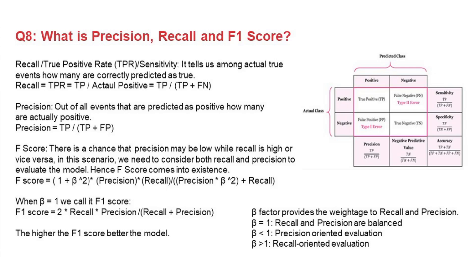Once we find recall and precision, these two values may differ significantly — recall may be high and precision may be low, or vice versa. We need to consider both to evaluate the model, and that is where we use the F score. Beta gives weightage to precision and recall. If we give equal weightage to both, we set beta to 1 and arrive at the F1 score: 2 × (recall × precision) / (recall + precision). Higher the F1 score, better the model.